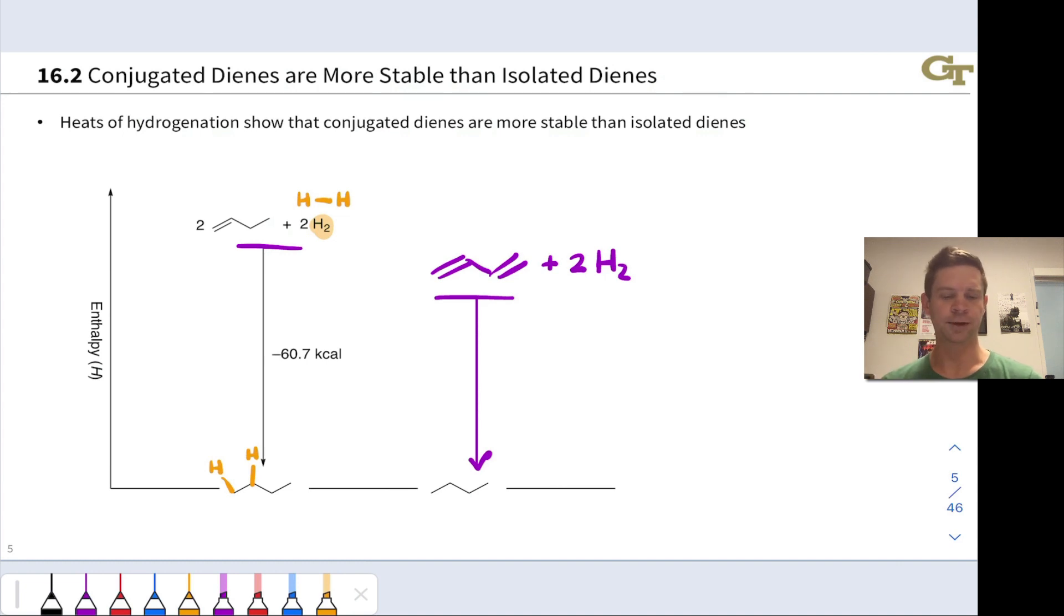When we do these two experiments, and we do, for example, calorimetry to measure the enthalpy change associated with these processes, we find that for the two moles of alkene, isolated alkene, the enthalpy change is negative 60.7 kilocalories. However, when we do the same experiment with 1,3-butadiene, we find that the enthalpy change is now only negative 57.1 kilocalories per mole.